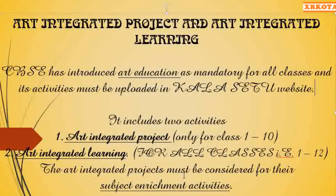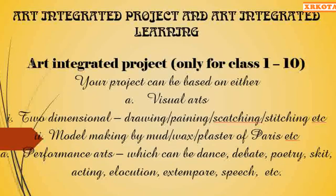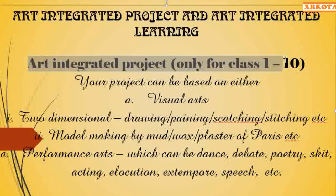Art integrated learning is actually what extract we get from those projects — what type of art education we have received and how we can use that in understanding science or any other subject. These are two different topics. First we will study art integrated project, which is only for students of class 1 to 10.